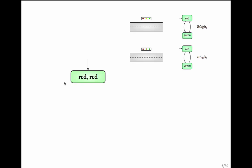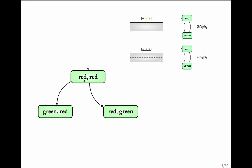Initially, let us say that traffic light 1 and traffic light 2 are red. Either traffic light 1 can go to green or traffic light 2 can go to green. Depending on the choice, if traffic light 1 goes to green we go to the state where the first component is green and the second component is red. If traffic light 2 goes to green, we go to a state where the first component is red and the second component is green. This is a non-deterministic choice.